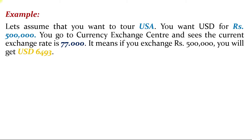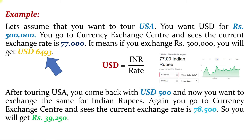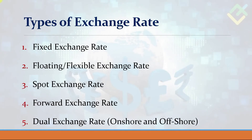After exchanging your 5 lakh rupees for US dollars, you will get USD 6,493. Now suppose you come back from the US to India with 500 US dollars left. You go again to the currency exchange center and see the exchange rate as 78.50. When you were going to the US the exchange rate was 77 — now it is 78.50, meaning the Indian currency against the US dollar has depreciated. You will get rupees 39,250 for 500 US dollars, calculated as USD × current exchange rate.